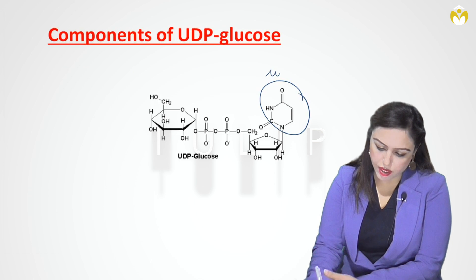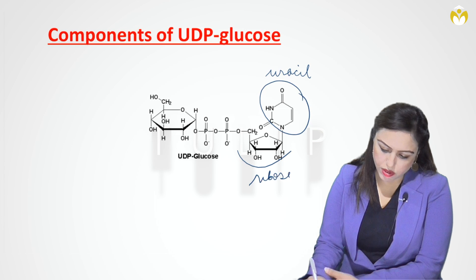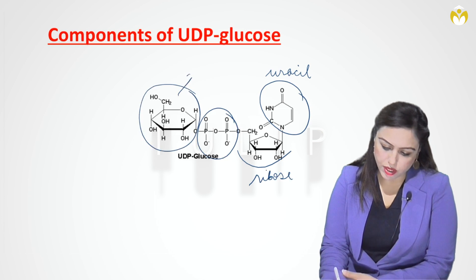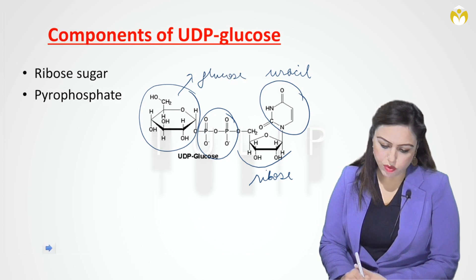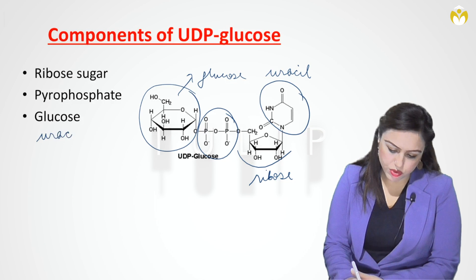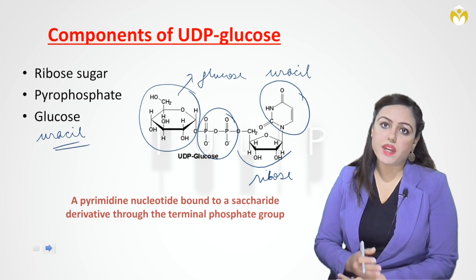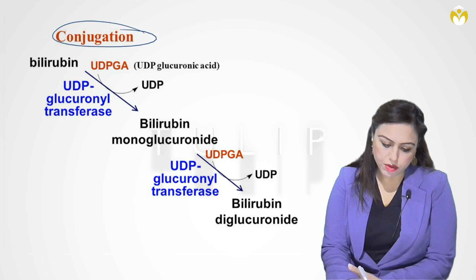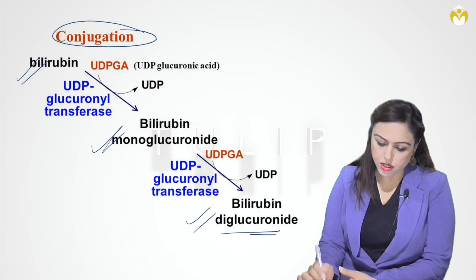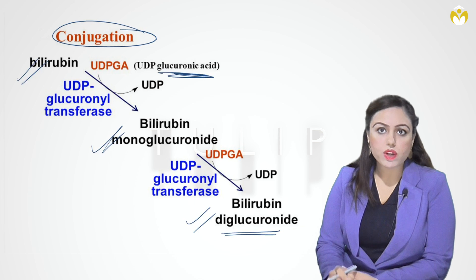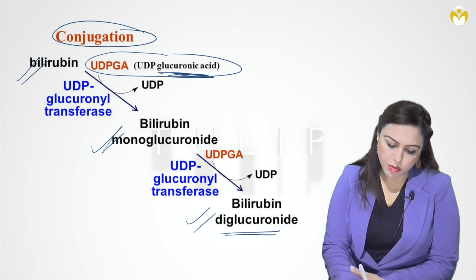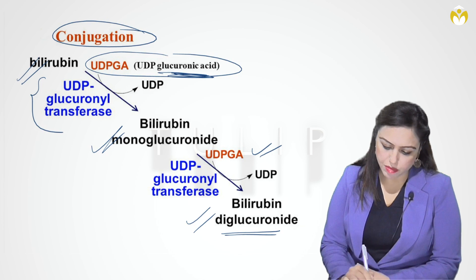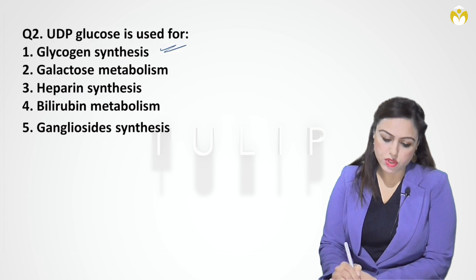The structure of UDP glucose consists of uracil (nitrogenous base), ribose sugar, two phosphates at the fifth position of the sugar, and glucose attached — components are ribose, pyrophosphate, glucose, and uracil. It is a pyrimidine nucleotide bound to a saccharide by its terminal phosphate. In bilirubin metabolism, bilirubin is converted to bilirubin monoglucuronide then diglucuronide using UDP glucuronic acid by the enzyme UDP glucuronosyltransferase.